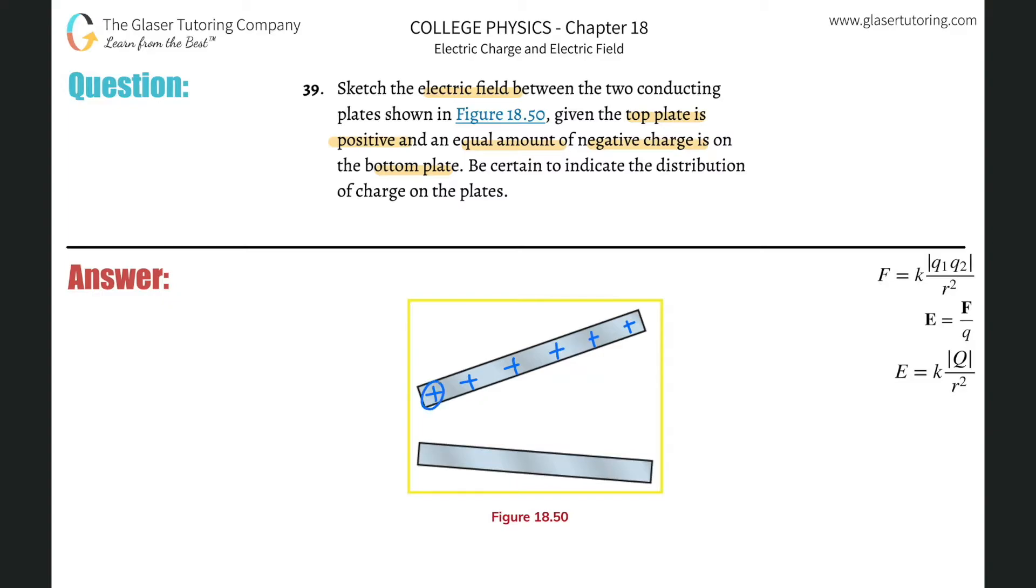All right, so we're going to look to maximize the distances between each of those positive charges. Similarly on the bottom, we're going to have one, two, three, four, five, six negative charges. We're going to have equal amount and they're going to be again equally separated.